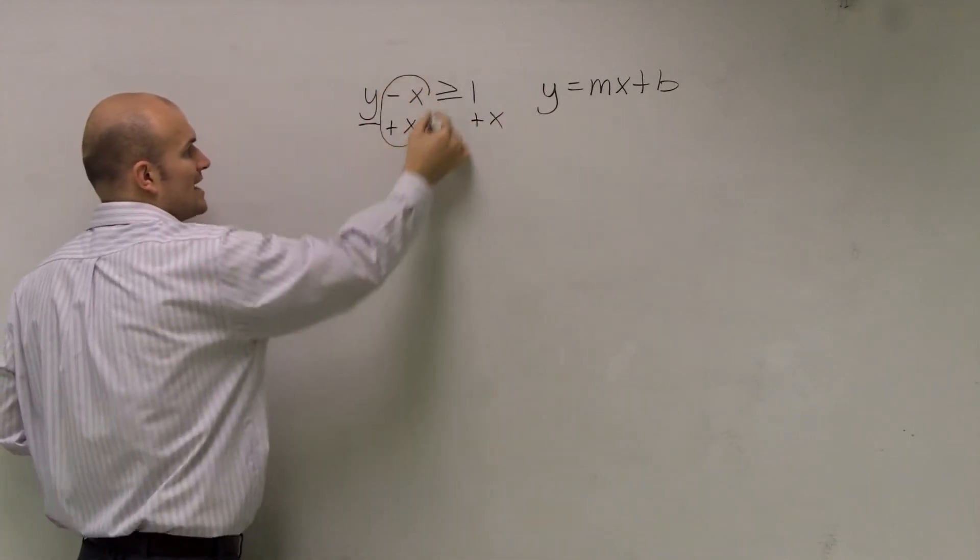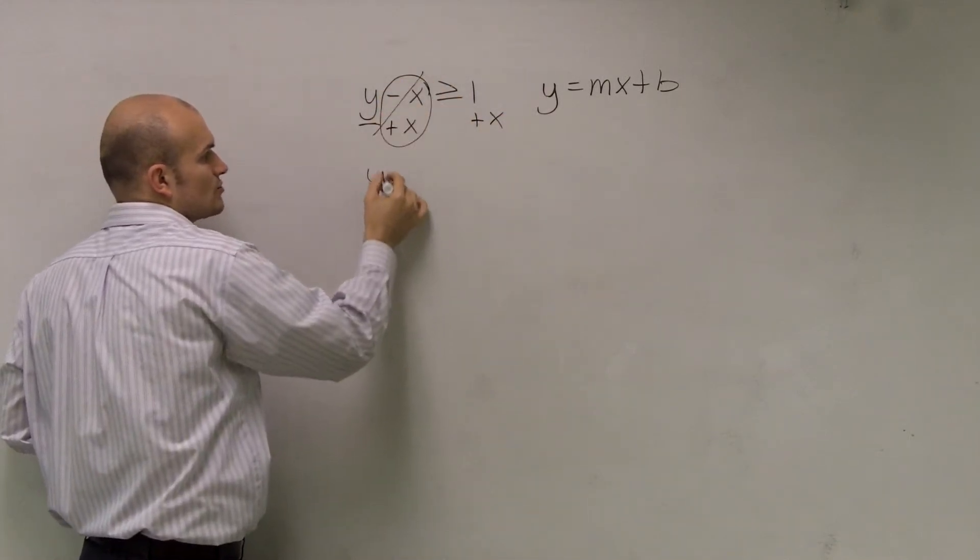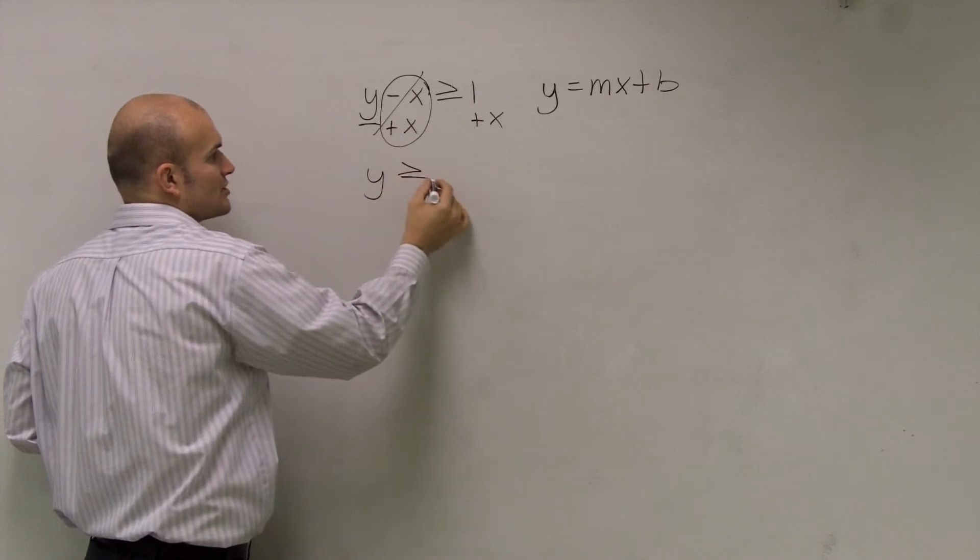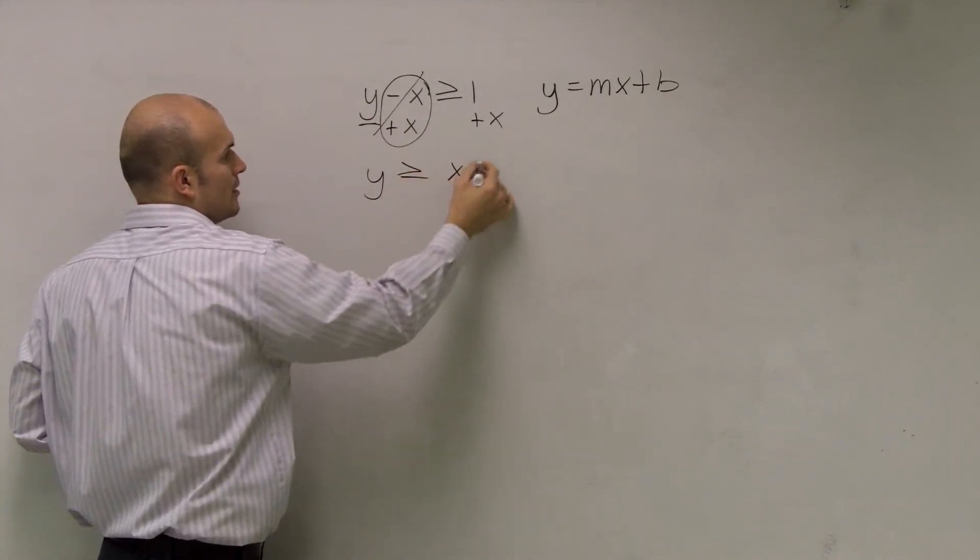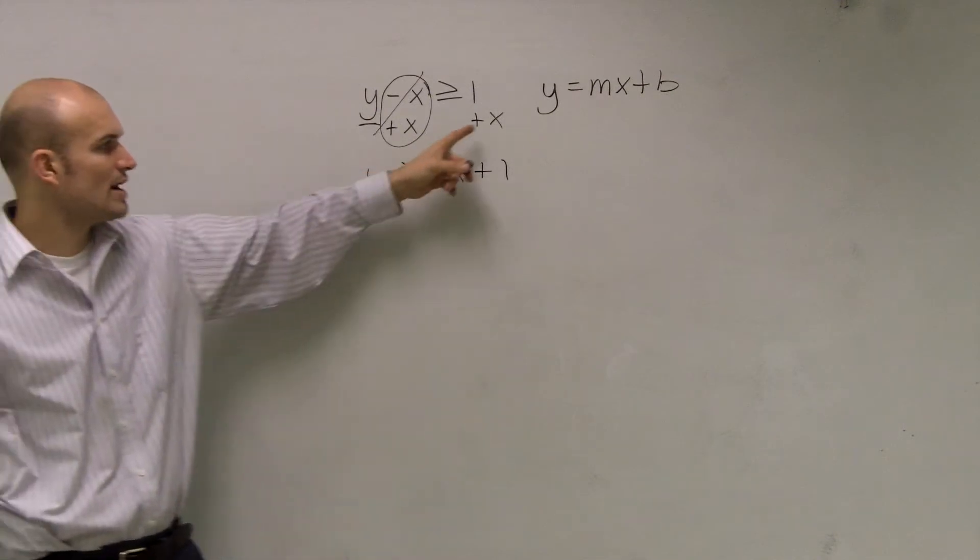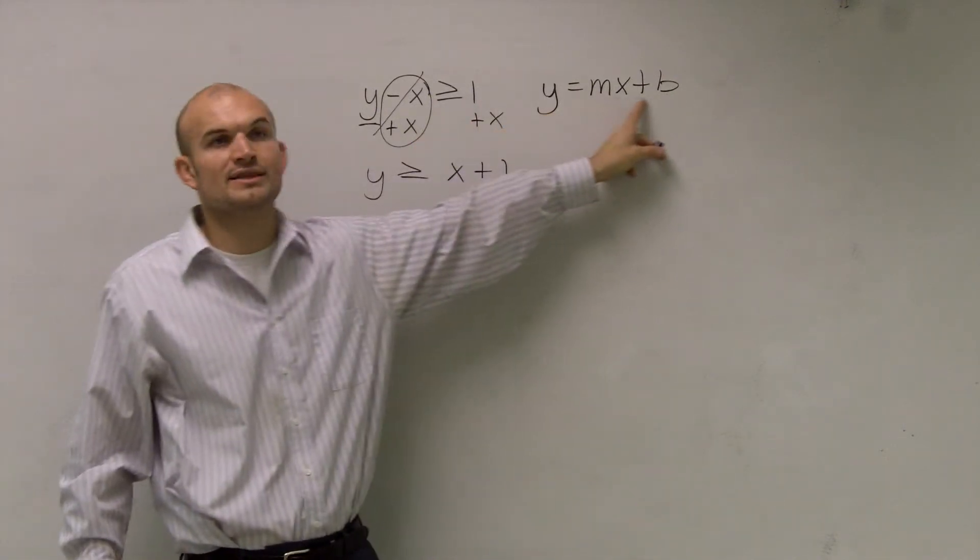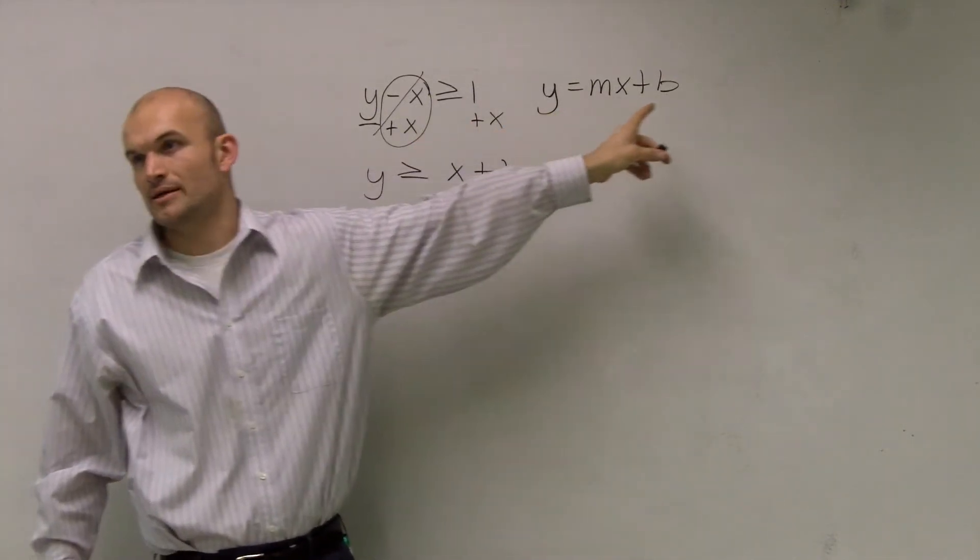Therefore, now that's going to go to 0. So I'm just left with y is greater than or equal to x plus 1. The reason why I wrote the x in front of the 1 is because I want it in this format, y equals mx plus b.